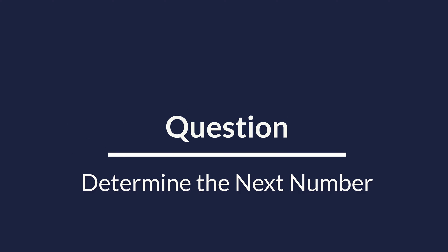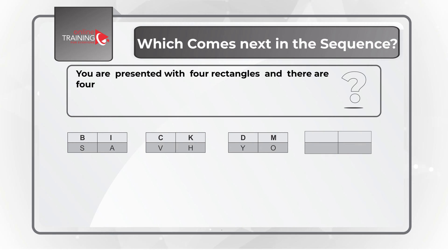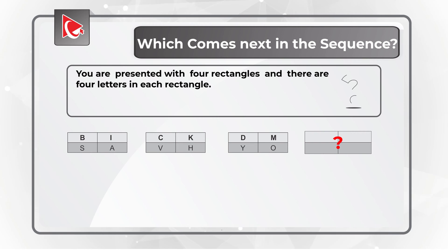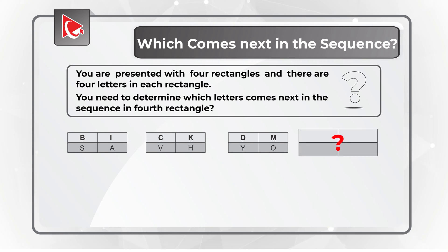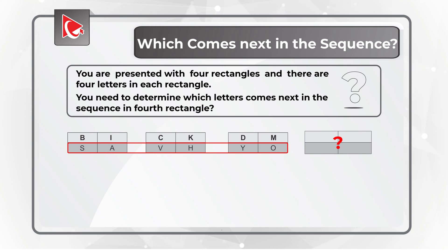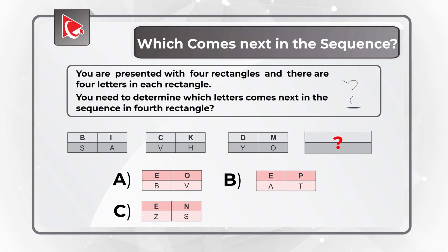Here is one of my favorite questions, where you need to determine the next number in the sequence. You are presented with 4 rectangles, each containing 4 letters. Three rectangles contain letters, and you need to determine the letters in the fourth rectangle. The upper row of letters is bold, and the lower row is regular font. You need to determine the item that comes next in the sequence, and you are presented with 4 different choices: A, B, C, and D.